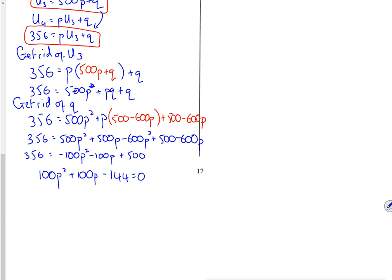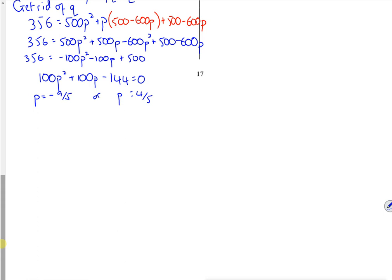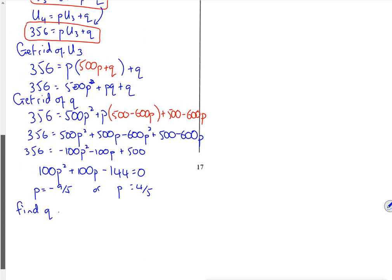So I'm going to take it all on to the left hand side. I've got 100p squared plus 100p minus 144. So that's going to give me 2p values if I put it into poly. So it gives me p is minus 9 over 5. Or p is 4 fifths. So from this now, because I've got p, I'm going to find q.